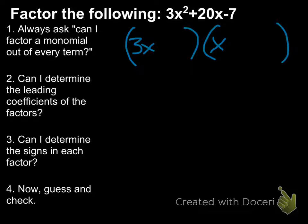Next, can I determine the signs in each factor? Well, I've got a minus 7 at the end. So I know that my signs have either got to be plus, minus, or minus plus. I'm going to try this first, minus and plus. Just a hunch. Let's go with it.